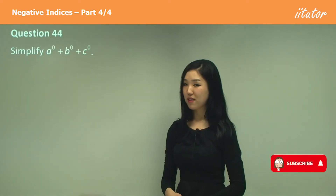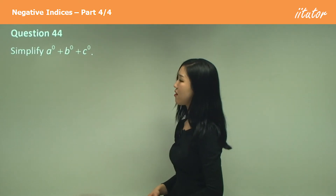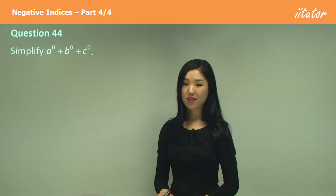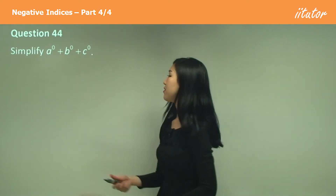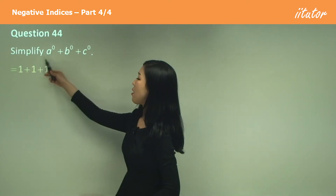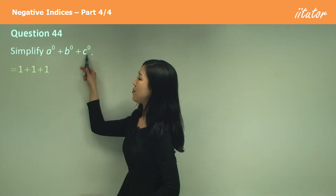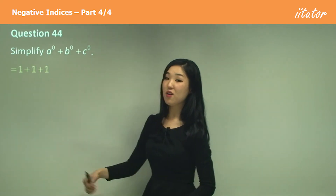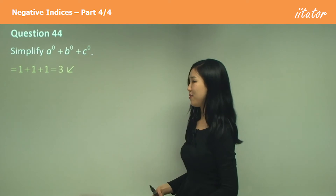a to the power of zero plus b to the power of zero plus c to the power of zero. Anything to the power of zero is one, so that will be one, that will be one, and that will also be one. One plus one plus one is three.